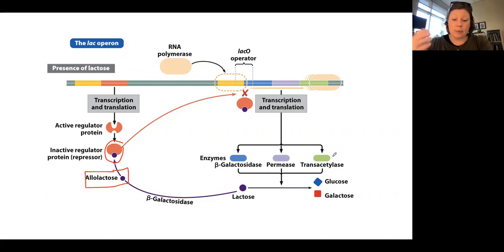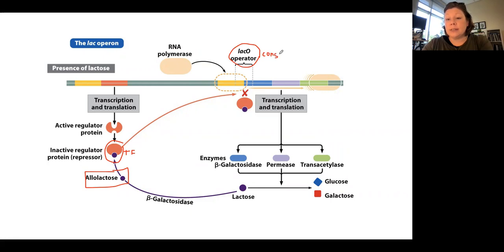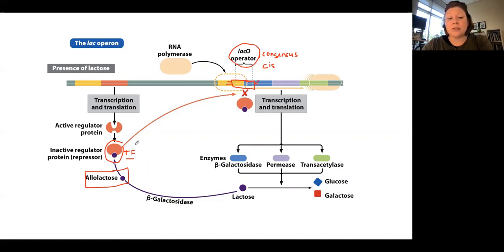So that's our basic lac operon. We've talked about the transcription factor — the trans-acting factor of this system. The operator region where the transcription factor binds is also called a consensus sequence. This consensus sequence is an example of a cis-acting factor. A transcription factor is trans-acting, and a consensus sequence is cis-acting — it acts locally because it can't travel anywhere; this piece of DNA is stuck next to its other DNA. Whereas a protein like a transcription factor can travel all over the cell.